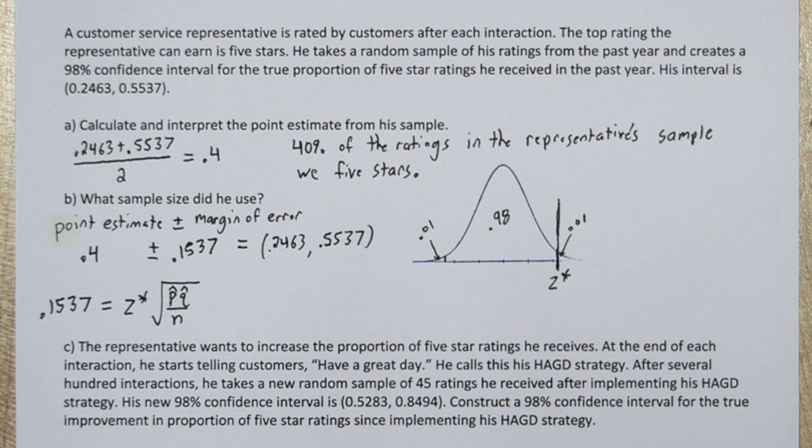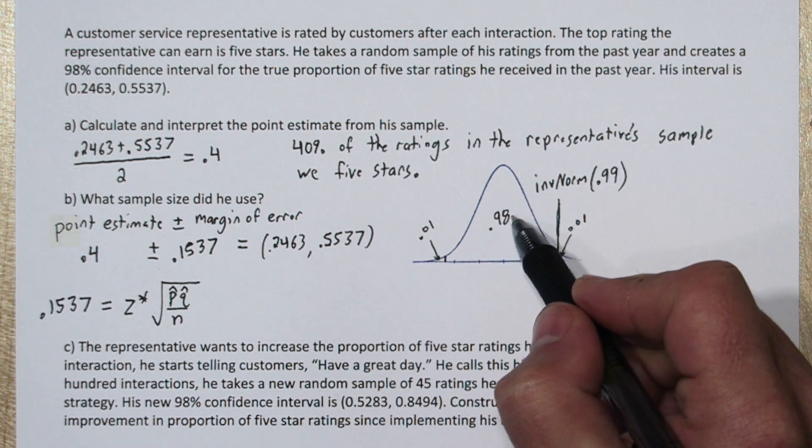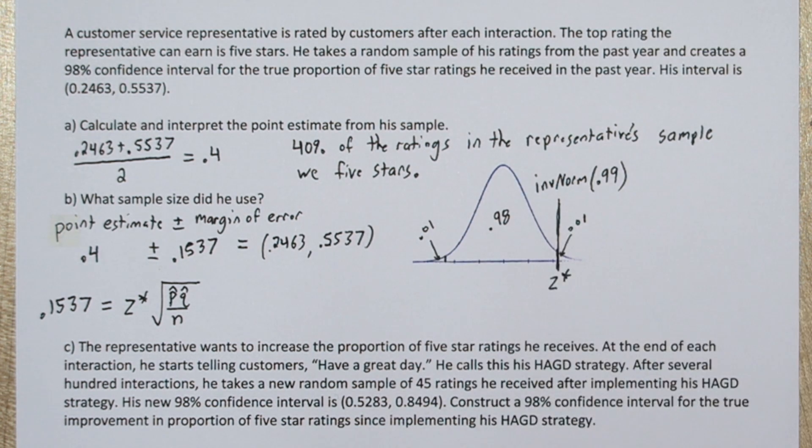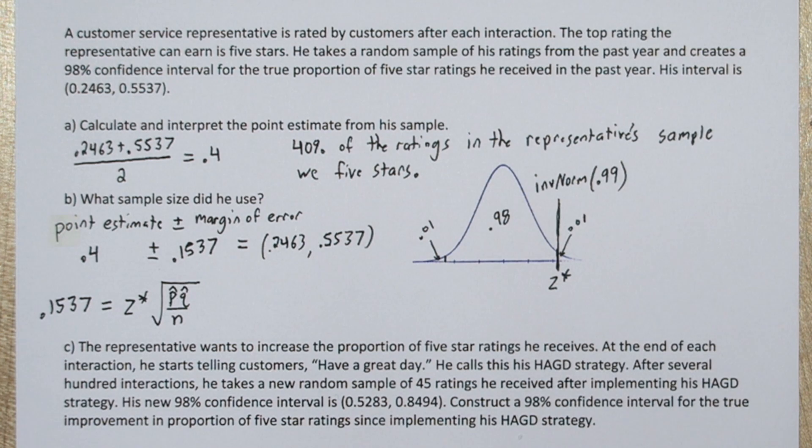We can use a function on our calculator called inverse norm. The way inverse norm works is you have to tell it what area to the left of the cutoff value you have. So we have our middle 98%, plus the 1% in the left tail, so we're going to use inverse norm 0.99 to figure out what this upper cutoff z star is.